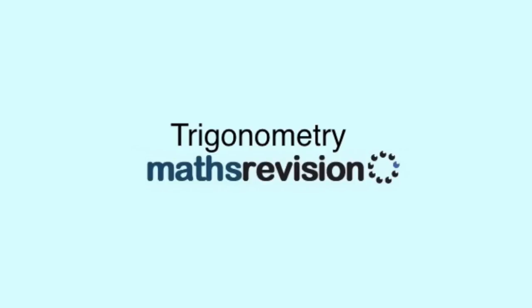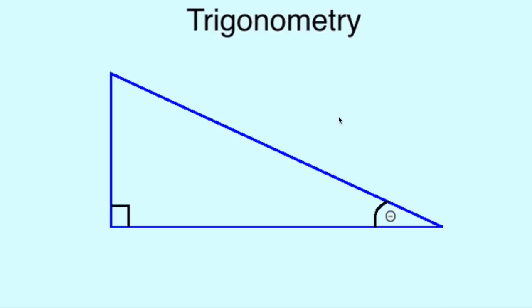Hi, and welcome to another video from MathsRevision.net. Trigonometry is the operation we use to find a missing side length or angle measurement within a triangle.